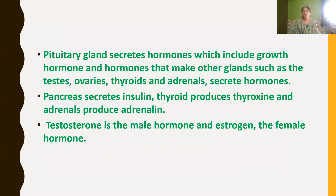Pituitary hormones secreted by the pituitary gland, which include growth hormone and many others, make other glands like testis, ovary, thyroid, and adrenal secrete their own hormones. The pancreas secretes insulin, the thyroid produces thyroxin, and the adrenal glands — present on top of the kidneys — produce adrenalin. Testosterone is the male hormone produced by the testis, and estrogen is the female hormone produced by the ovaries.